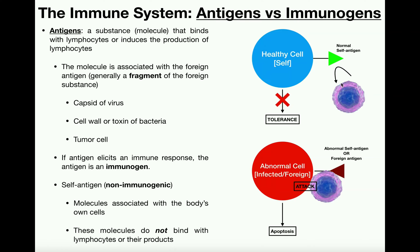Both of these — the self antigen and the abnormal/foreign antigen — are both antigens. Remember, an antigen potentially induces an immune response. The abnormal or foreign one does induce an immune response, but the self antigen does not — yet they're still both antigens. If you were to take that healthy self cell and put it into someone else, it would be perceived as foreign by that other person and could still induce an immune response. When an antigen does elicit an immune response, that antigen is considered an immunogen, or it's immunogenic. In your own body, the healthy cell would not be an immunogen — it's a non-immunogen. However, an abnormal cell, whether infected, cancerous, or foreign, would be an immunogen and would elicit an immune response.